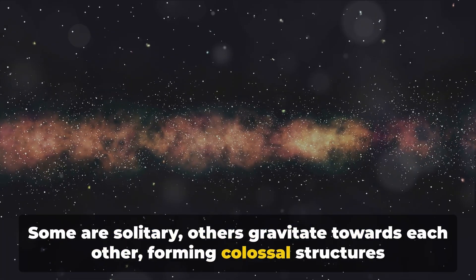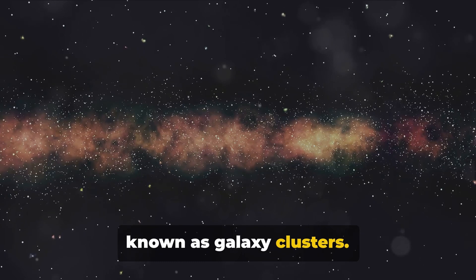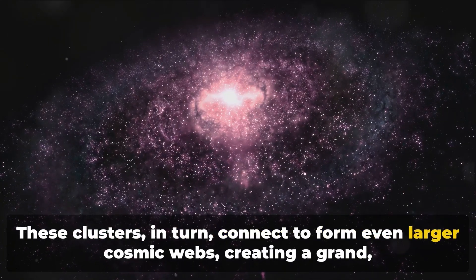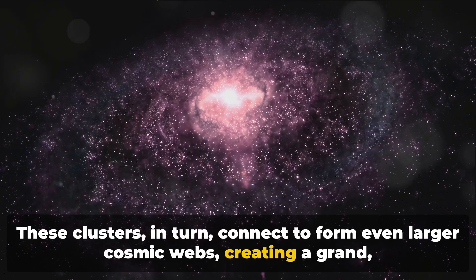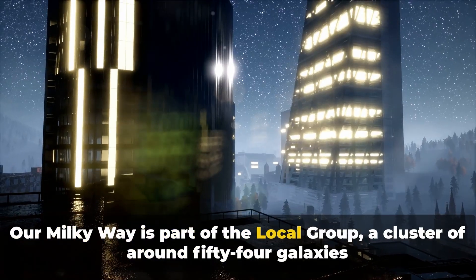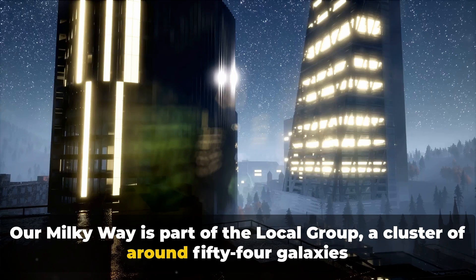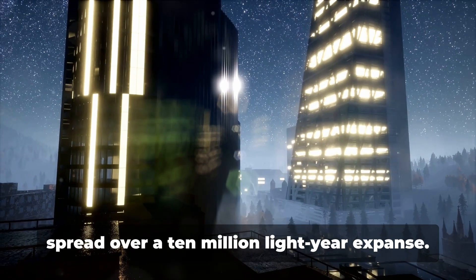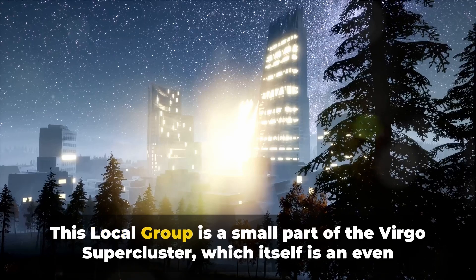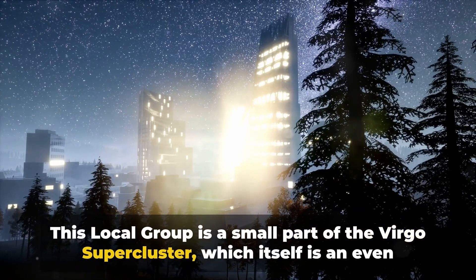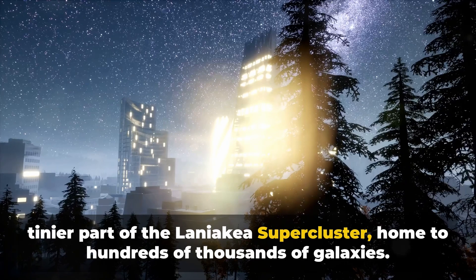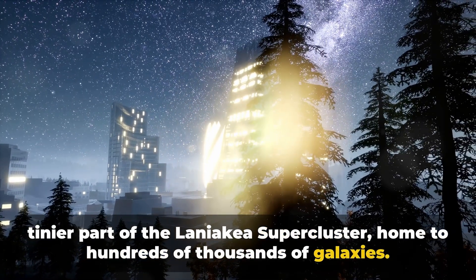These clusters, in turn, connect to form even larger cosmic webs, creating a grand, interconnected universe. Our Milky Way is part of the Local Group, a cluster of around 54 galaxies, spread over a 10 million light-year expanse. This local group is a small part of the Virgo supercluster, which itself is an even tinier part of the Laniakea supercluster, home to hundreds of thousands of galaxies.